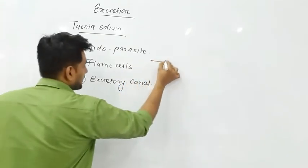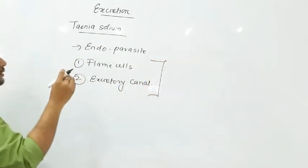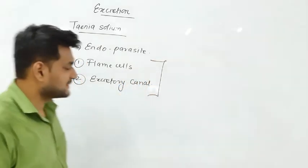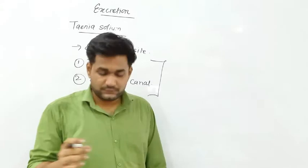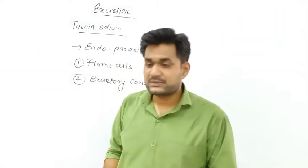These two parts make up the excretory system of Taenia solium. Let us now discuss flame cells.